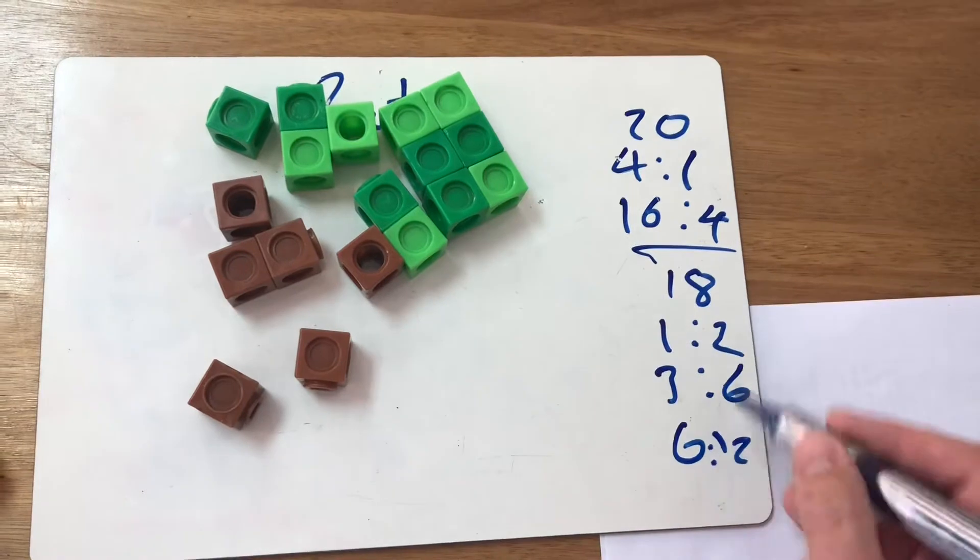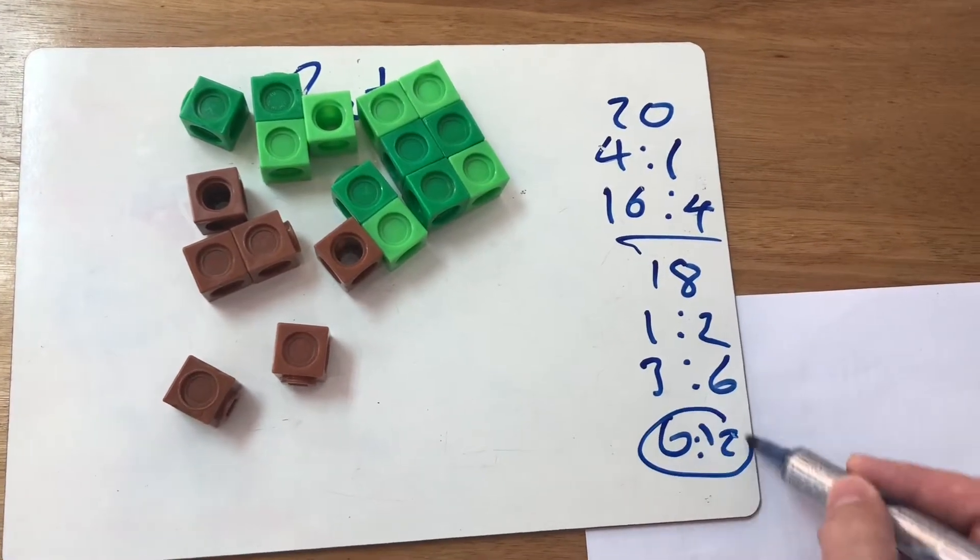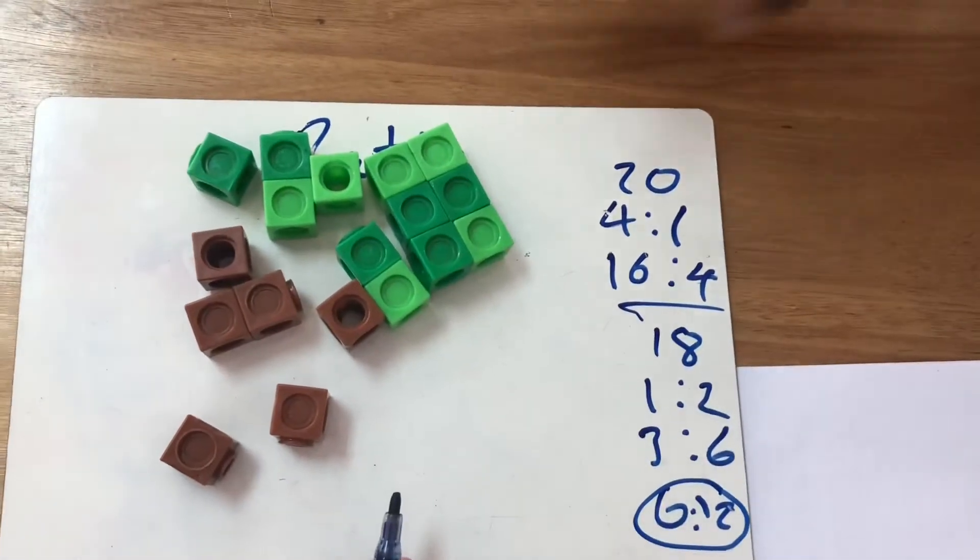So you broke up 18 in the ratio 1 to 2 and that split the total up 6 to 12. Brilliant. Thanks very much.